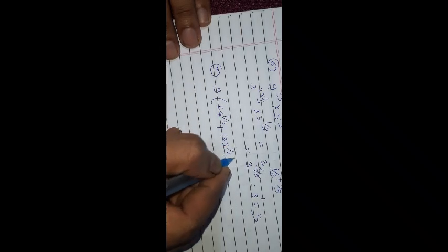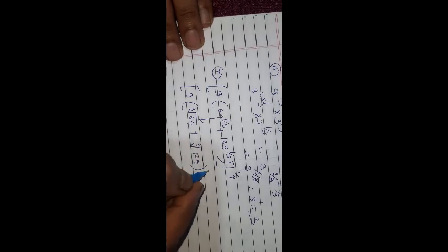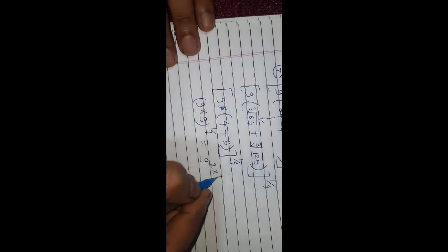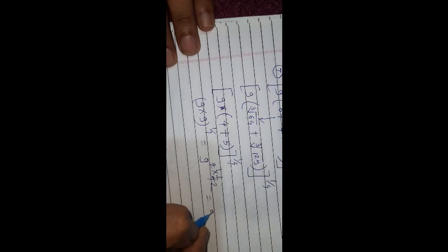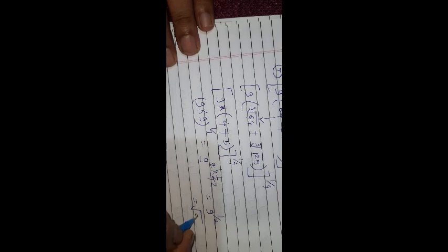Question 7: value of 9(64^(1/3) + 125^(1/3))^(1/4). The cube root of 64 is 4, and the cube root of 125 is 5. So we get 9(4 + 5)^(1/4) = 9 × 9^(1/4) = 9^(1 + 1/4)... actually 9 × 9^(1/4) = 9^(5/4)... Re-evaluating: 9 × (9)^(1/4) → writing as 9^(1) × 9^(1/4) — but simplifying gives 9^(1/2) = √9 = 3. Answer is 3.